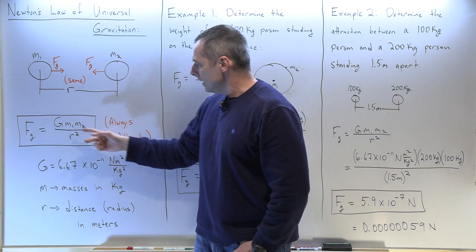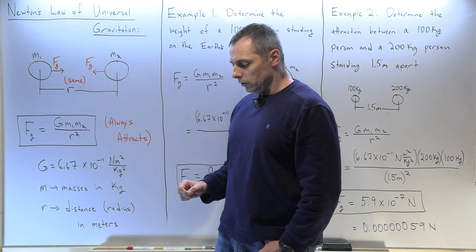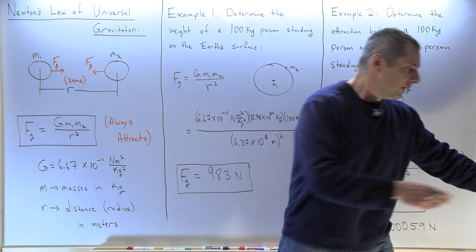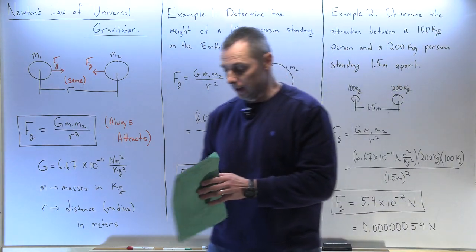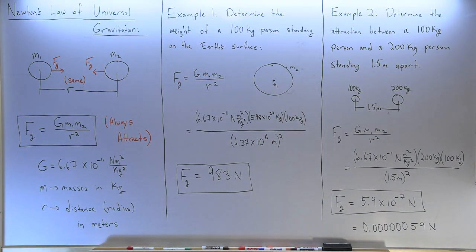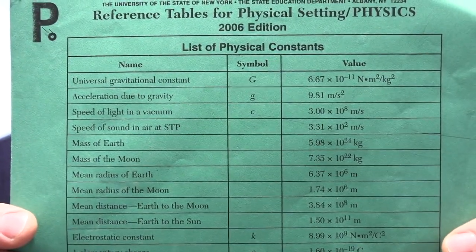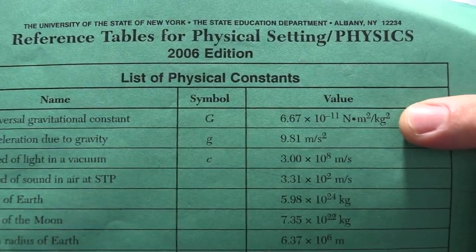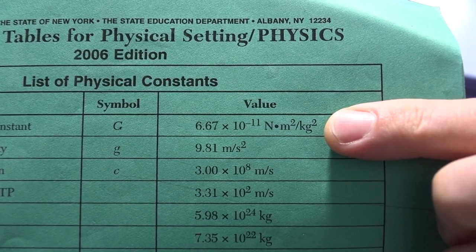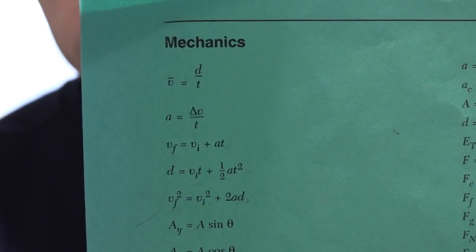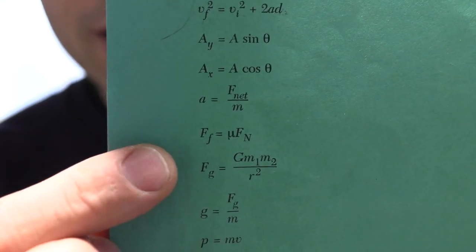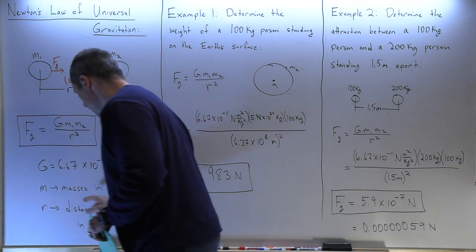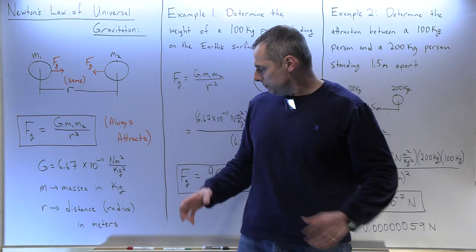What do these numbers mean? Capital G is the universal gravitational constant, found on the front cover of the reference table. Its units are Newtons times meters squared over kilograms squared. The equation G times m1 times m2 over r squared is in our mechanics section on the reference table. The masses m1 and m2 are in kilograms, and r is the distance between the two objects in meters.